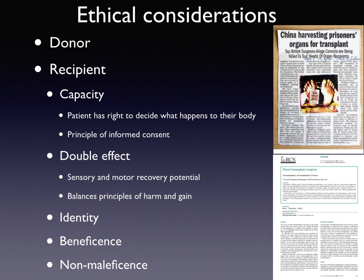Clearly there has been a big uptake in hand transplantation worldwide, and some ethical considerations must be addressed. Regarding the donor: China was criticised for using tissues from prisoners who had died. There is also evidence that visible organs or tissues — such as corneas, hands, and face — may reduce the willingness of donors to join transplant registries on opt-in systems, which is an important consideration to avoid reducing the available pool of potential donors.